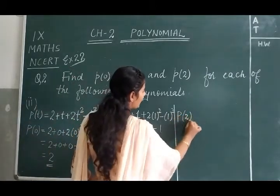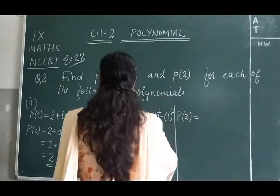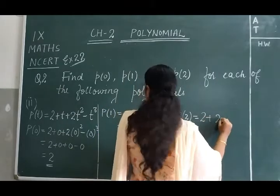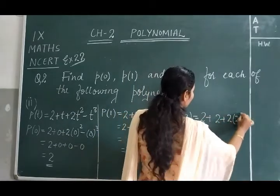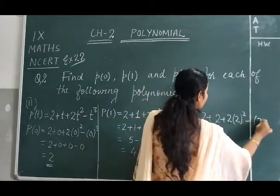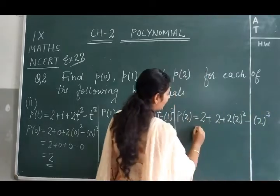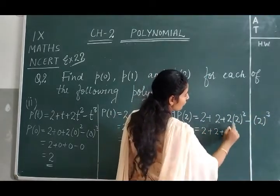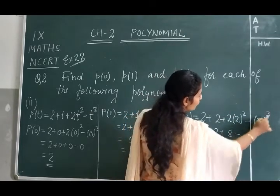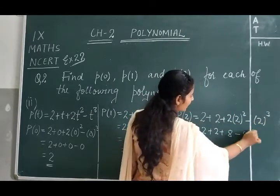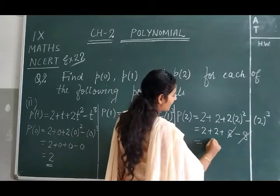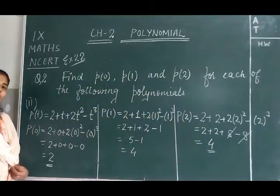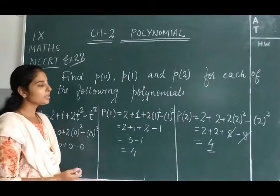For P(2), we put t = 2: 2 + 2 + 2(2²) - 2³. So 2 + 2 is 4, plus 2 times 4 is 8, minus 2³ which is also 8. So 4 + 8 - 8 = 4. This is all about the second part of question number 2.